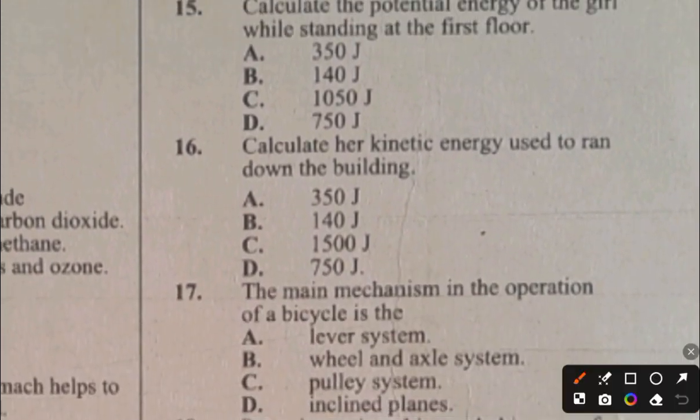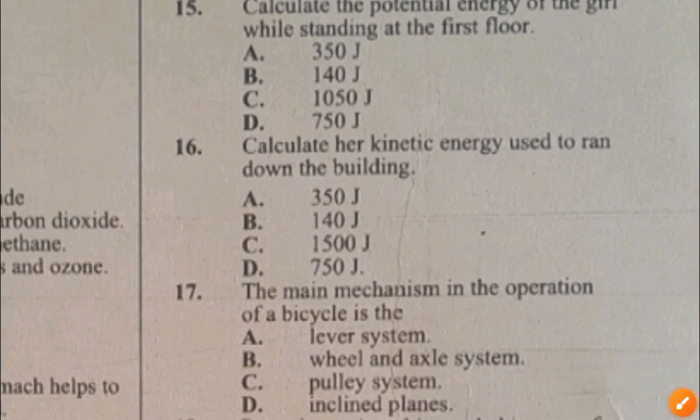Question 17. The main mechanism in the operation of a bicycle is: A. Lever system, B. Wheel and axle, C. Pulley system, D. Inclined planes. The answer to question 17 is B, wheel and axle system.